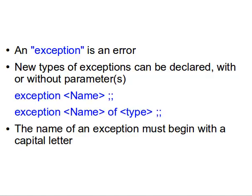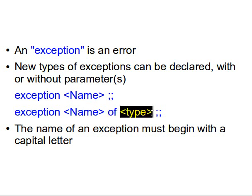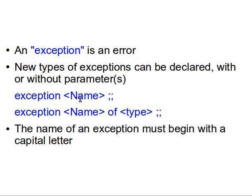Welcome everyone. This time we're going to learn about OCaml exceptions — errors. In OCaml, as in several other languages like Java, we can declare our own exceptions. The way we do that is simply write 'exception' followed by a name, which must always begin with a capital letter. We can also give it parameters or arguments if we want.